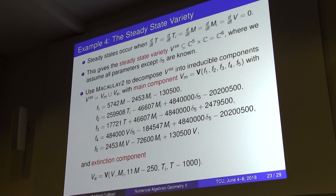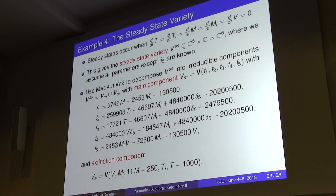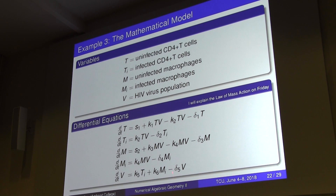We're interested in the steady state — when you've been sick a while, taken drugs, and things have approached equilibrium. Setting all derivatives to zero gives a system of algebraic equations involving the five variables plus delta_5, the one parameter we assume we don't know. We get this steady state variety.